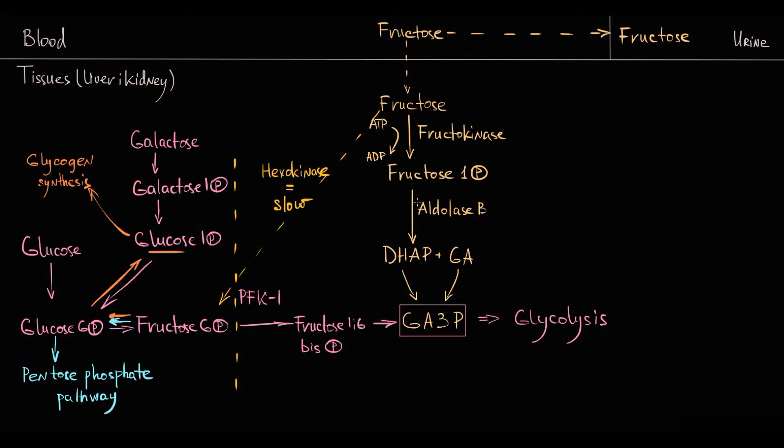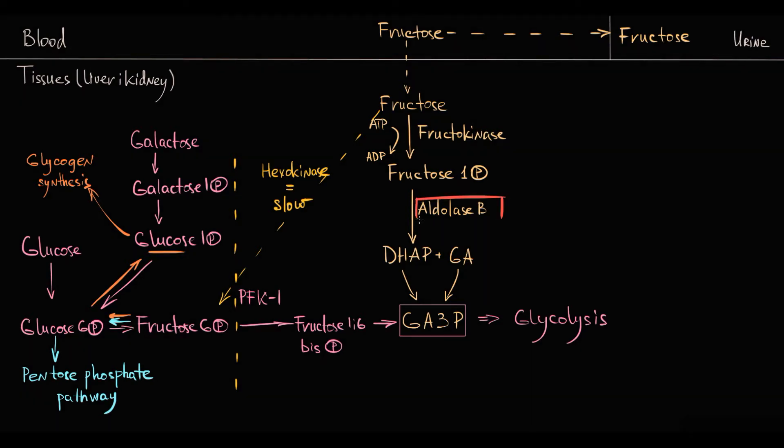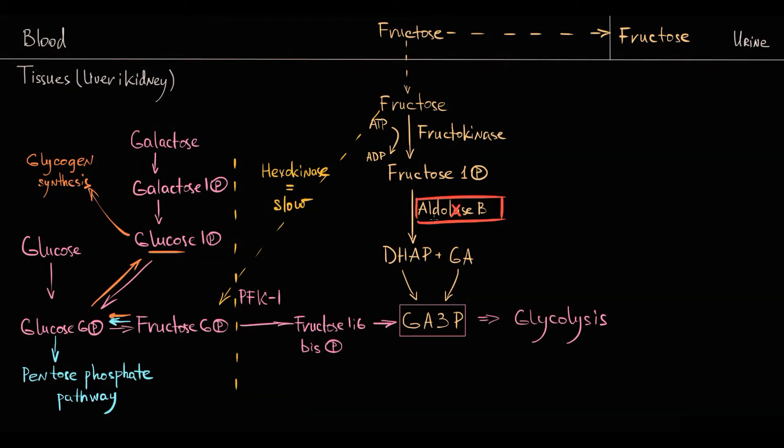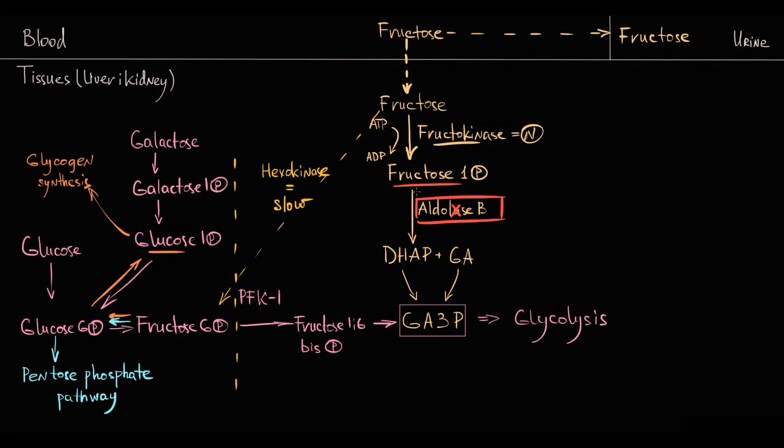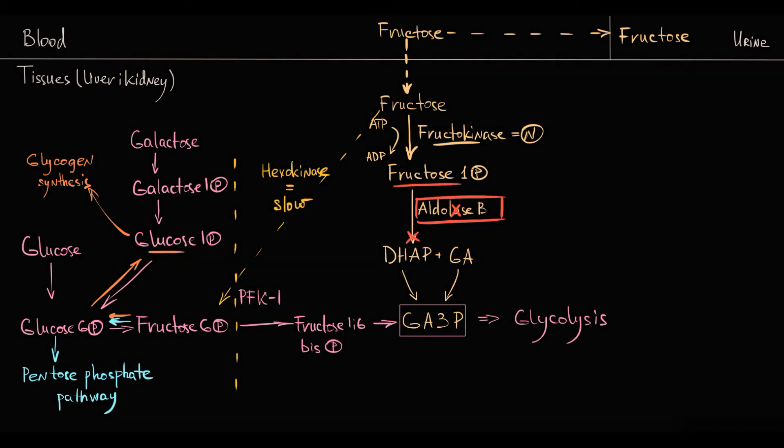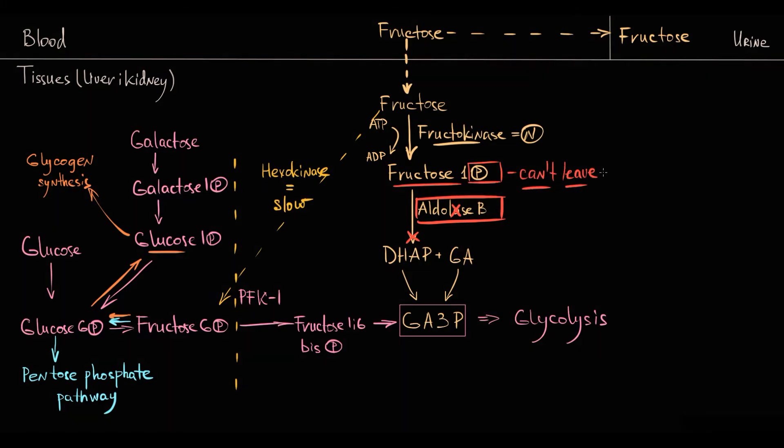The second disorder is caused by deficiency or complete absence of aldolase B. The problem here is that when fructose is incoming to the cell, fructokinase is working as usual. It phosphorylates fructose with production of fructose 1-phosphate. But because aldolase B is absent, further fructose metabolism becomes impossible. Also, fructose 1-phosphate cannot leave the cell because it has a phosphate group on it. So fructose 1-phosphate progressively accumulates in the tissues.